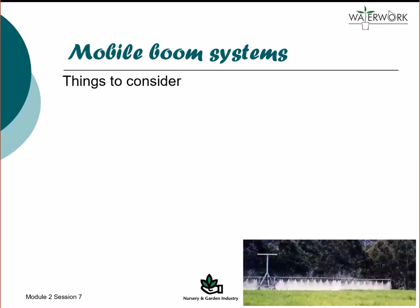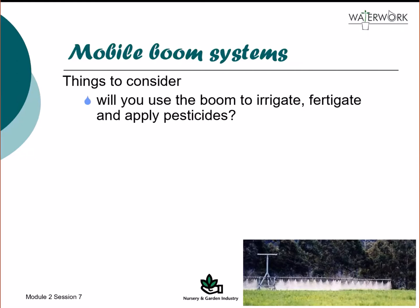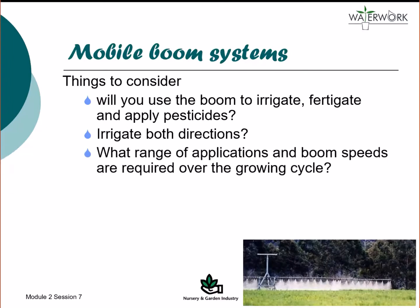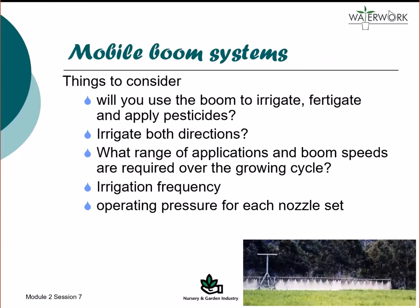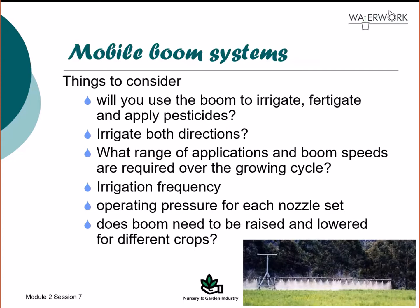Before installing a mobile boom irrigation system, the nursery operator should consider: will the boom be used to irrigate or also apply fertilisers and pesticides? Does the boom need to irrigate in both directions? What range of application rates and boom travel speeds are required to supply plants over their whole growing cycle? Is proportional application required by varying the speed of the boom? What are the water requirements of the plants and at what frequency do they require irrigation? What operating pressures does each nozzle set require and how will this be regulated? Does there need to be an option to raise or lower the boom height?